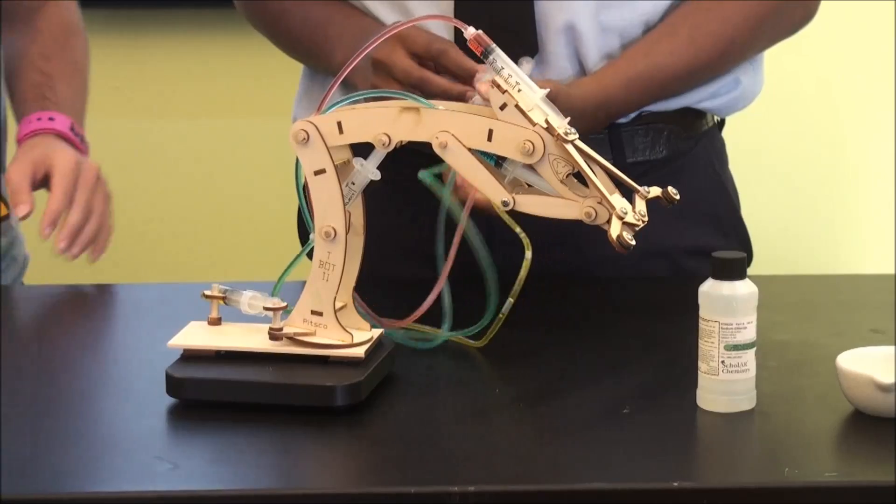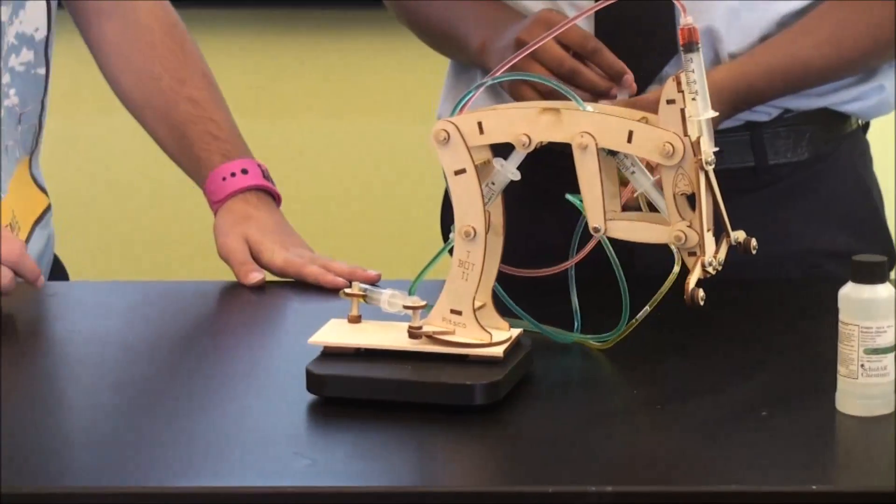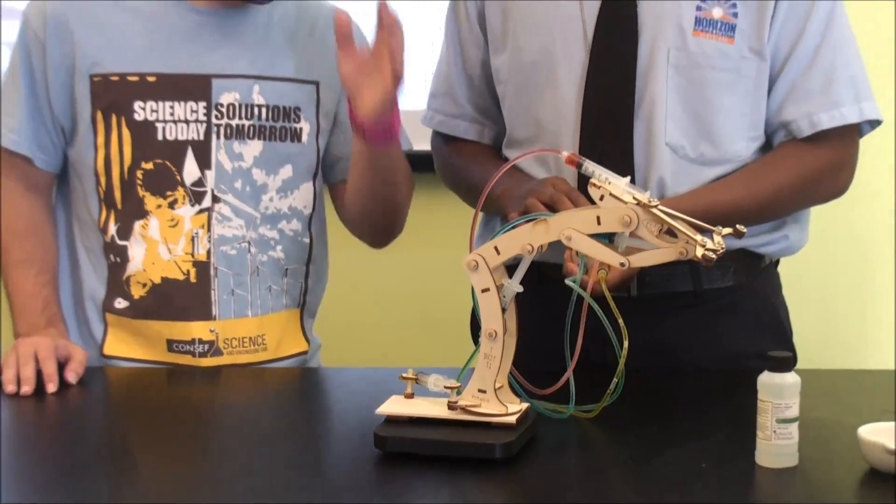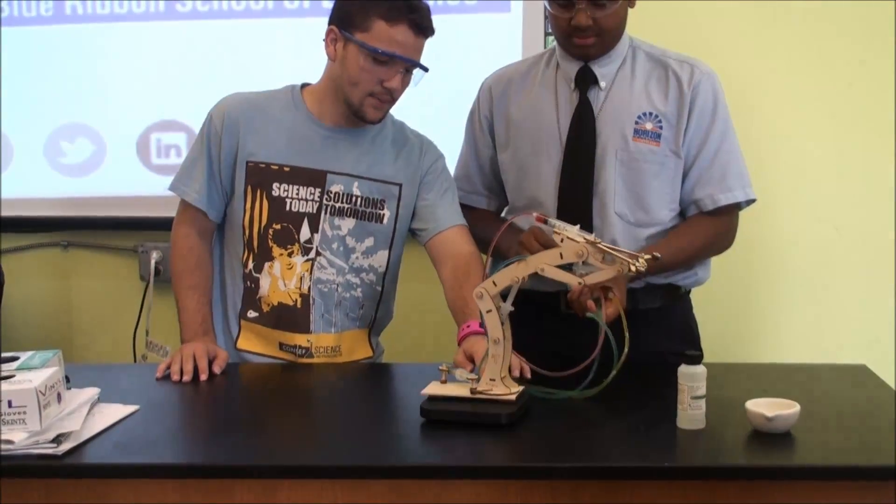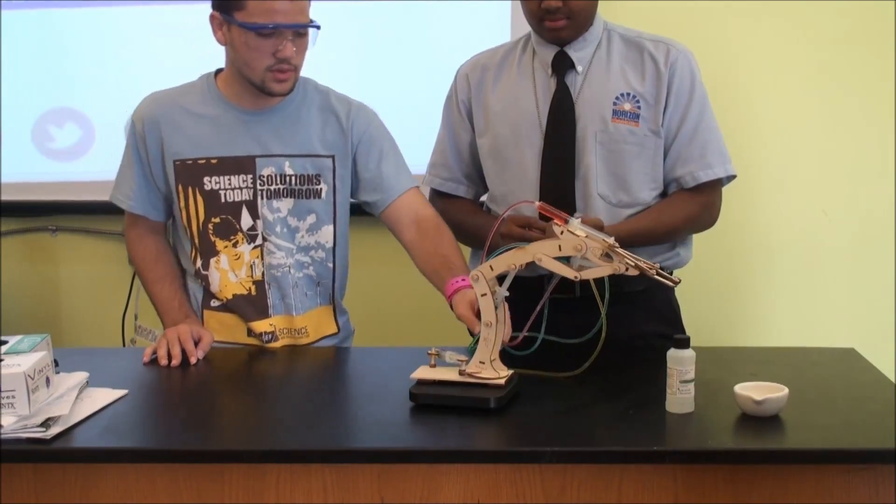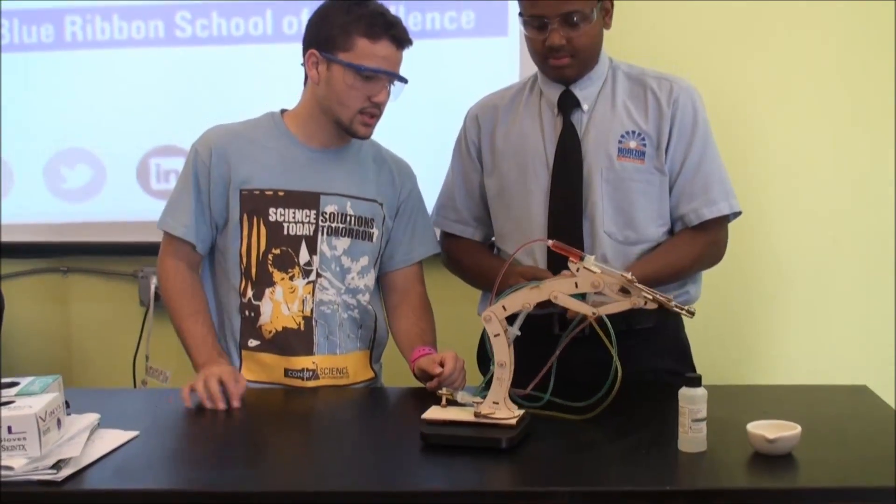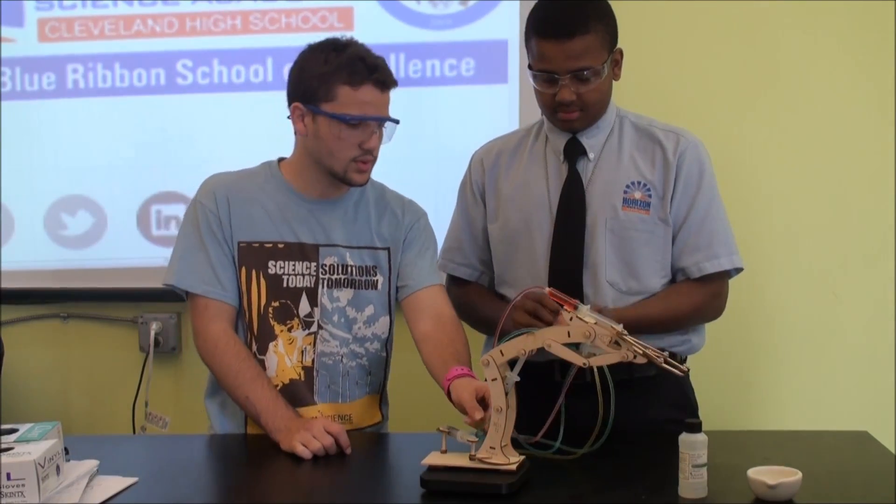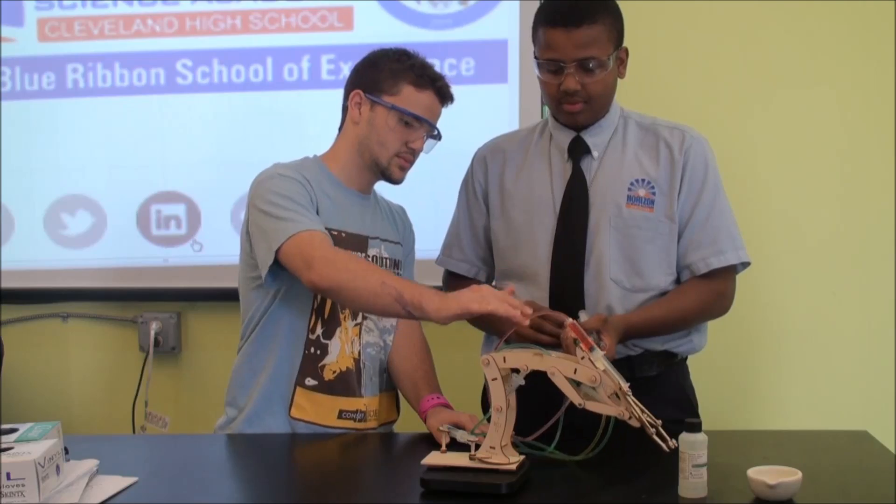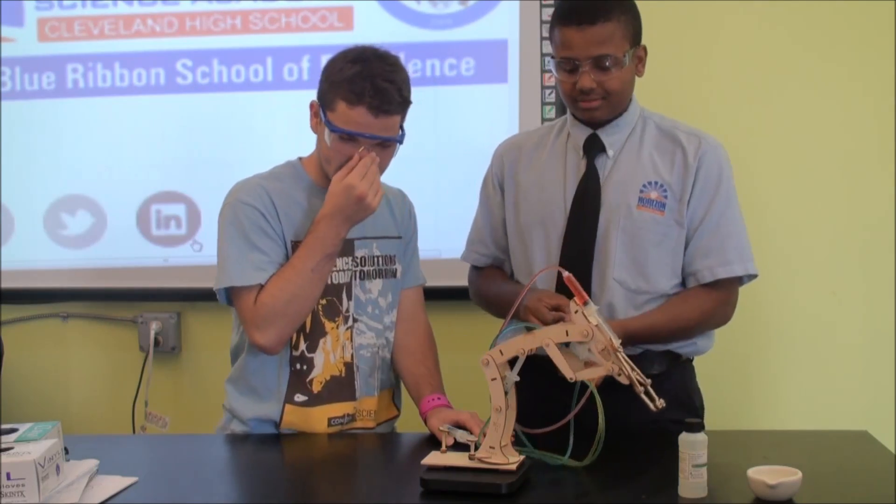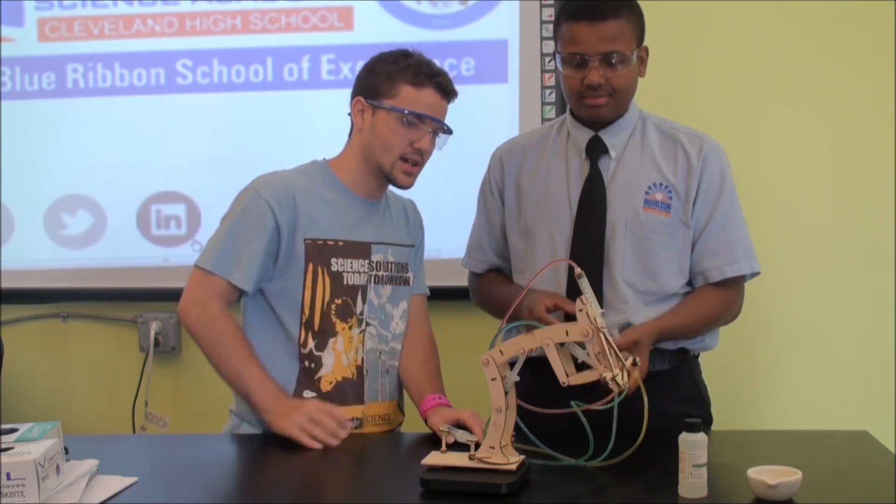Alright, these syringes work on axis. And the whole T-Bot works on axis. Like, the yellow is connected to the base, which moves it. The green one is connected to the joint, a joint of a leg, the forearm, which makes it move up and down.